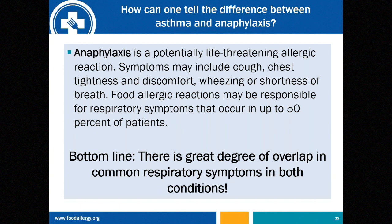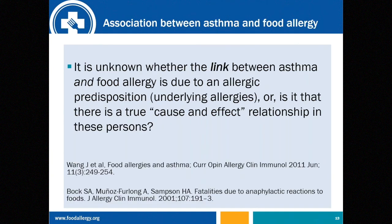Looking at the association between asthma and food allergy: it is unknown whether there's a link due to an underlying predisposition — an underlying allergy — or a true cause-and-effect relationship. Researchers such as Julie Wang at Mount Sinai have examined this question. We know that children with food allergies and asthma are at greater risk for near-fatal and fatal allergic reactions, especially when their asthma is not well controlled.